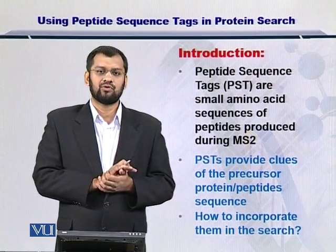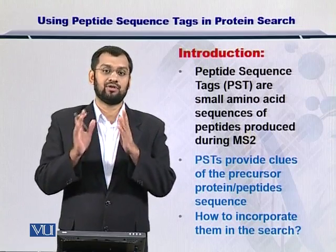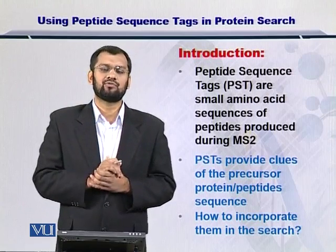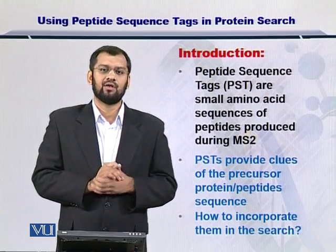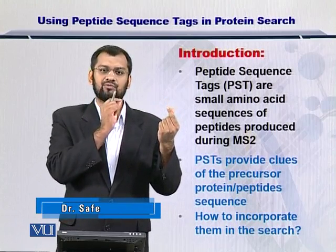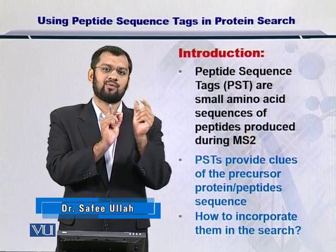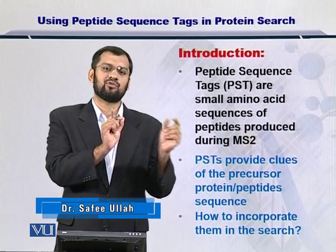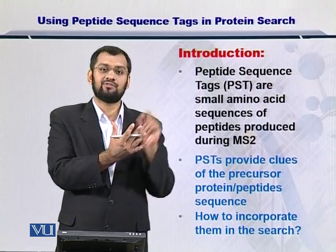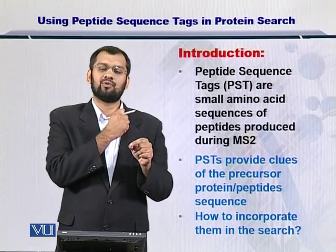You can do this process for multiple proteins. In your protein sequence database you will have hundreds of thousands of proteins. You take a peptide sequence tag, take one protein from the database at a time, and scan this peptide sequence tag within the sequence of that protein. If the protein contains that peptide sequence tag, it becomes your candidate protein.